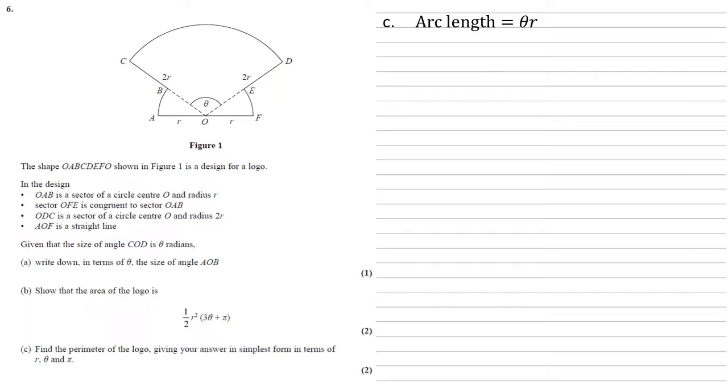So for the arc CD, we've got a sector of angle theta, radius 2R, so its arc length is 2θR.